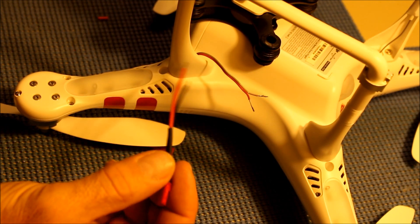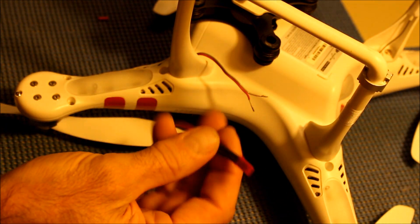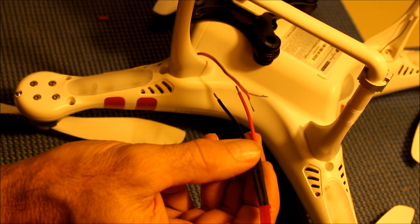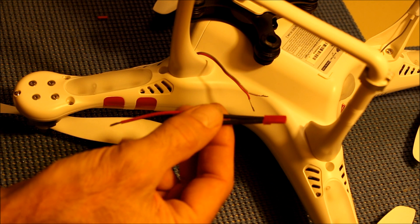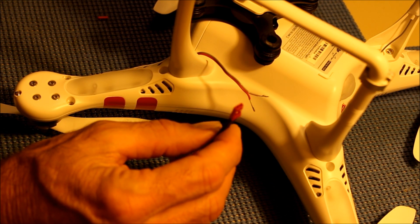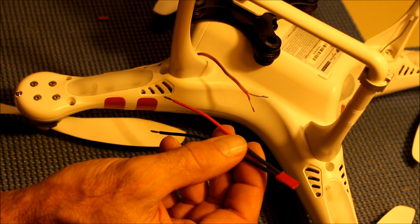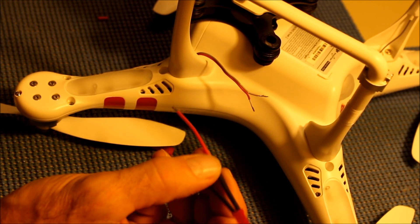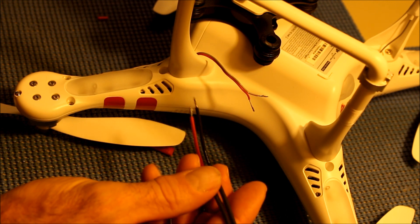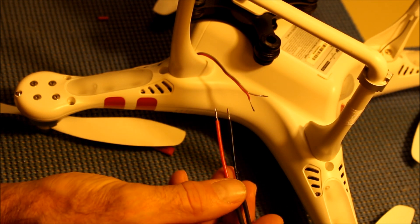Now I'm going to solder onto the auxiliary power cable from the quadcopter the short cable that I got with a two conductor connector from ReadyMadeRC. The leads on this ReadyMadeRC cable are red and black.